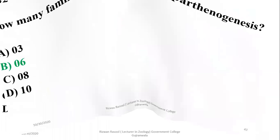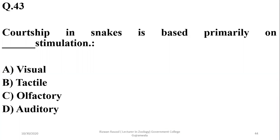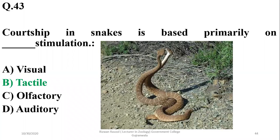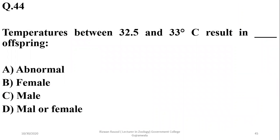Question forty-two: courtship in snakes is based primarily on tactile stimulation, which is involved in the courtship behavior of many snakes. Question forty-three: a temperature range between 32.5 to 33 degrees Celsius results in male offspring. The correct option is charlie.